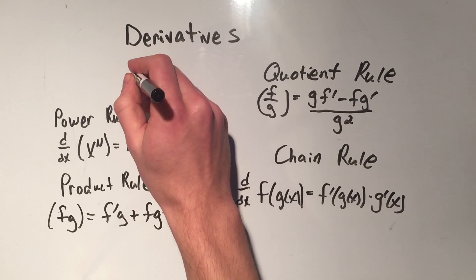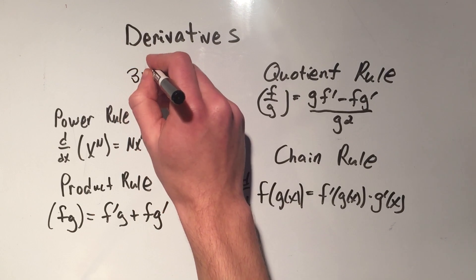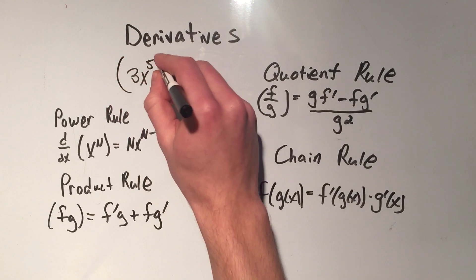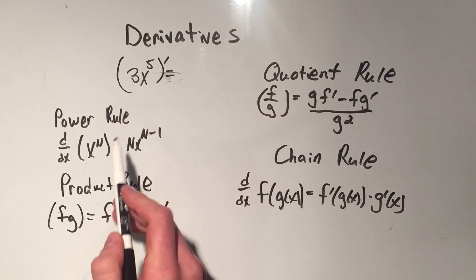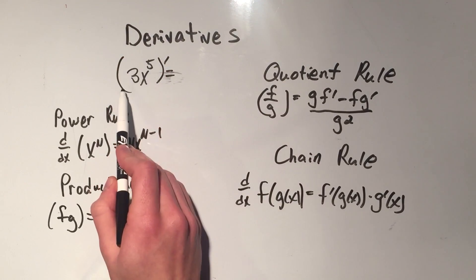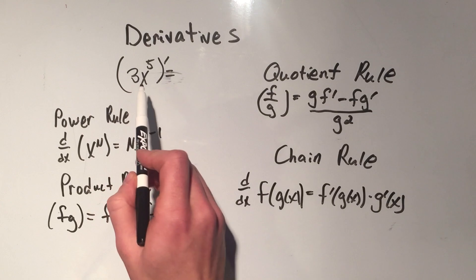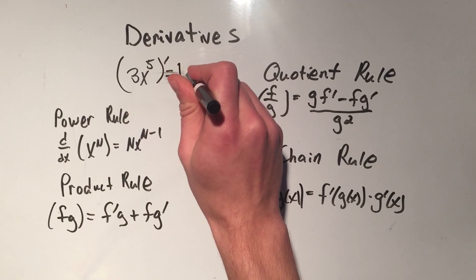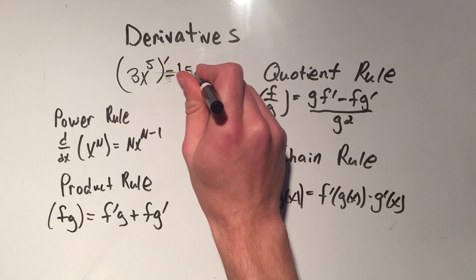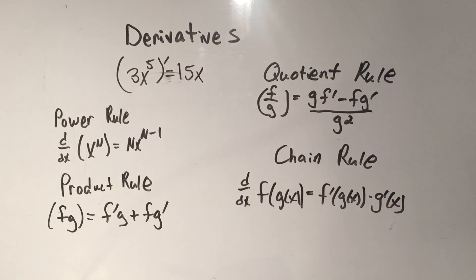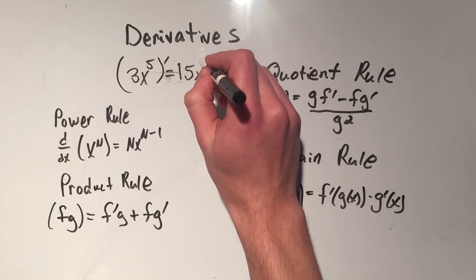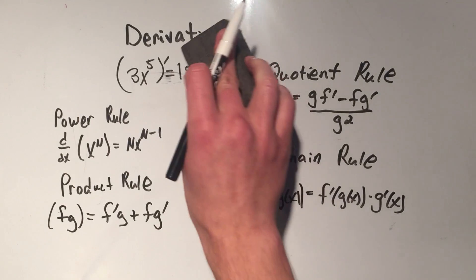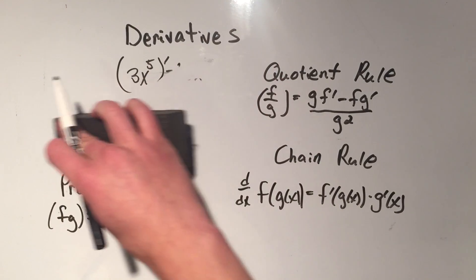So for example, if I had 3x to the fifth and I wanted to take the derivative of that, I would bring down the n — multiply by the power — so 3 times 5 would be 15, and then I subtract 1 from the power. So 5 minus 1 would be 4. That would be the derivative using the power rule.